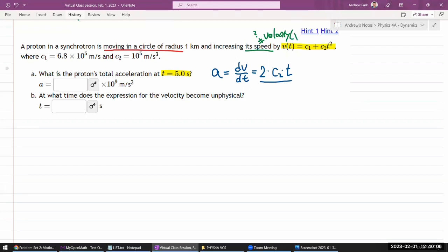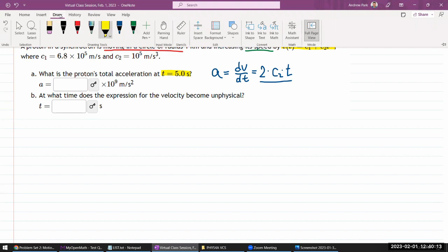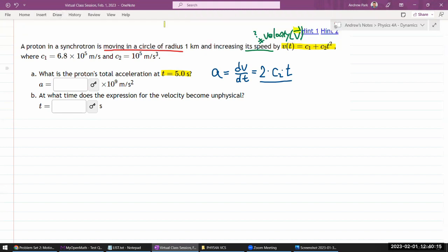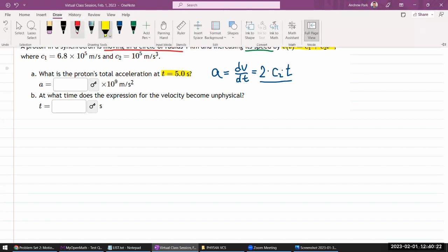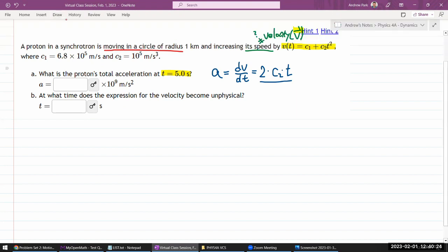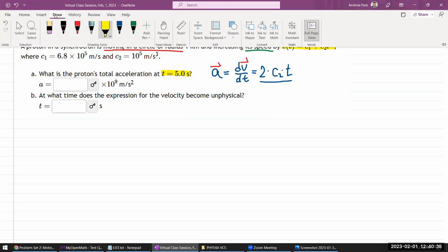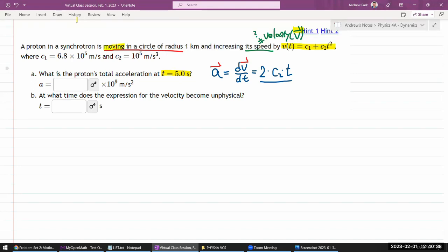Velocity means one thing. Speed means something related but different. So whenever we talk about velocity, I will often emphasize that it's a vector quantity. It's a quantity with magnitude and direction. And that matters. And when you are thinking of the definition of acceleration, what it really should have been is acceleration as a vector quantity is a rate of change of the velocity as a vector quantity.